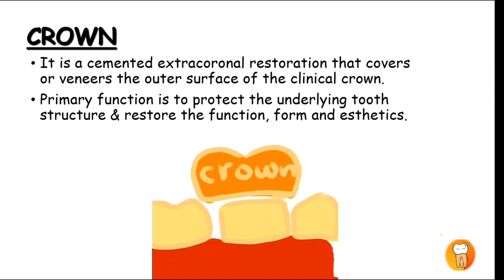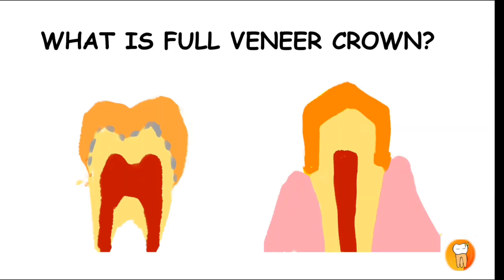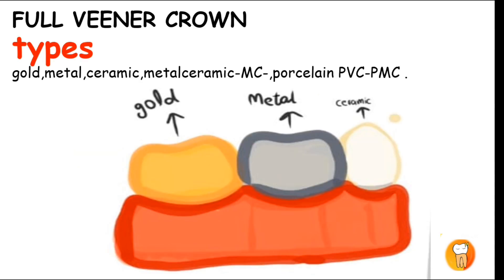There are different types of crown. A crown may be divided into a full veneer crown or a partial veneer crown. A full veneer crown covers all the surfaces of the tooth entirely. There are different types of full veneer crown based on the material used for fabrication.